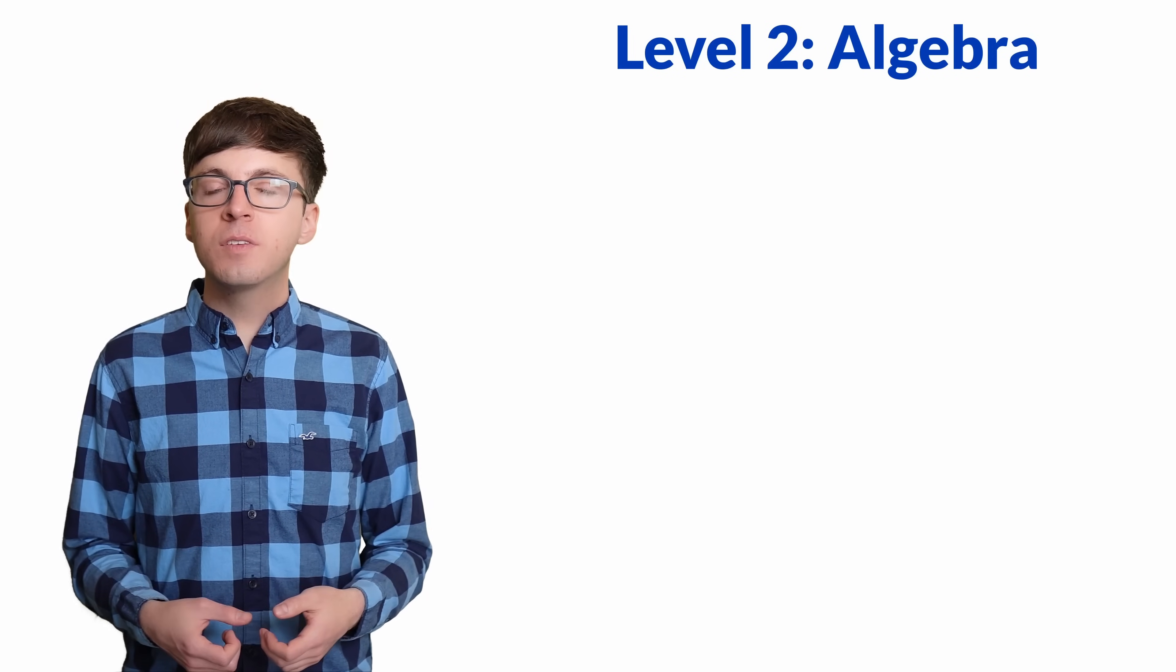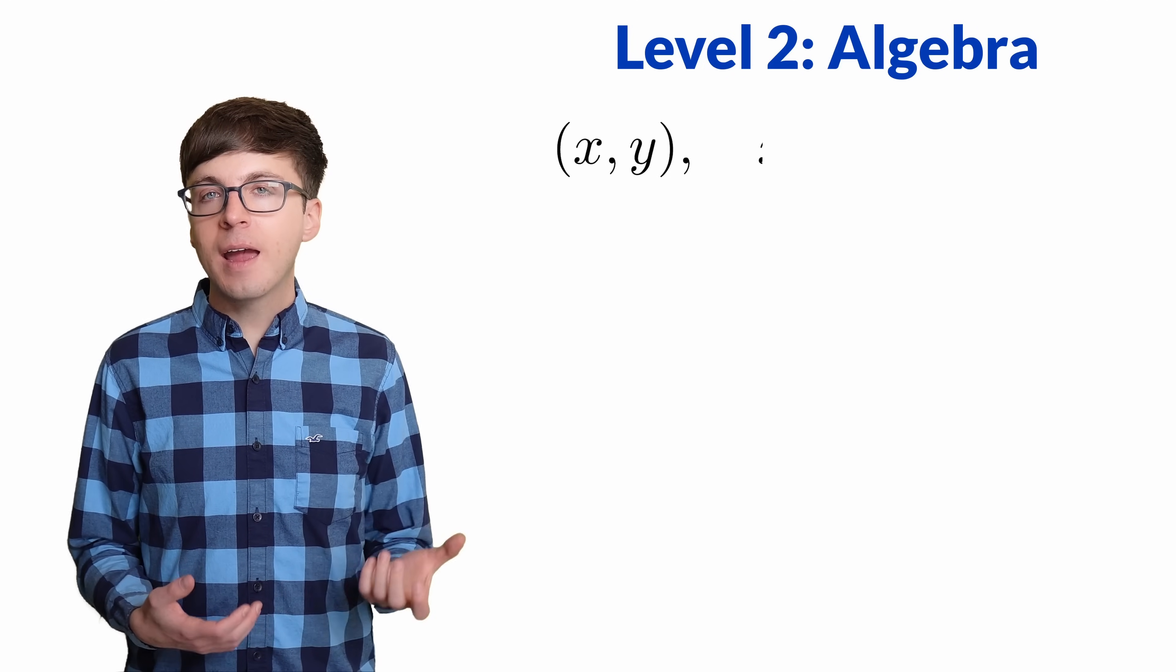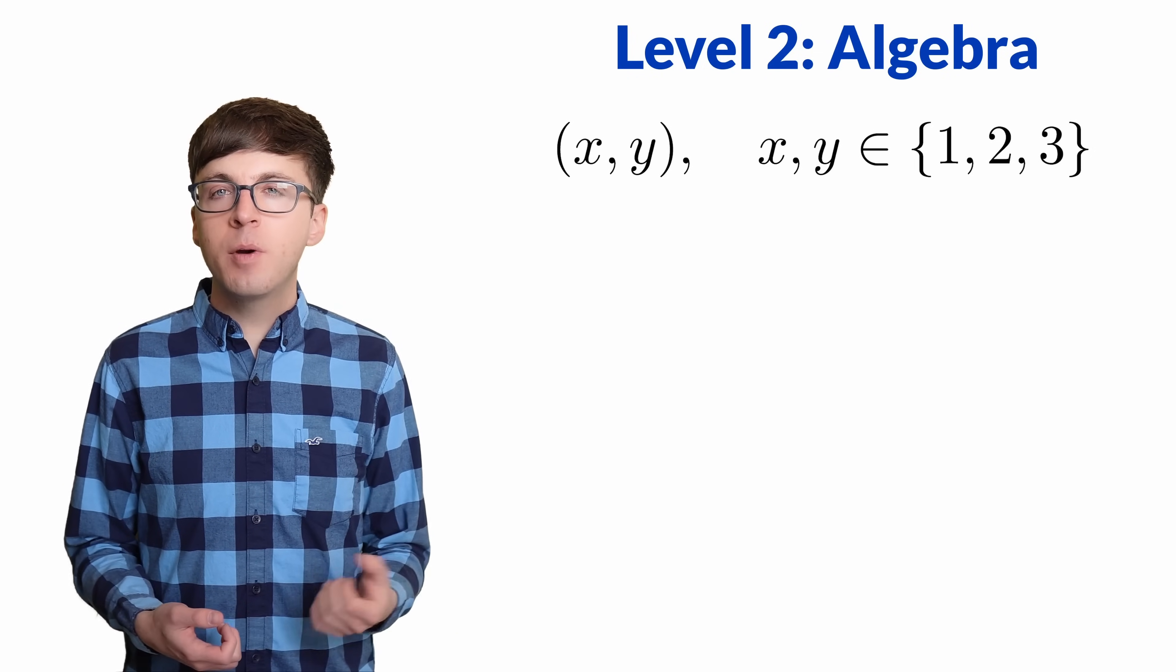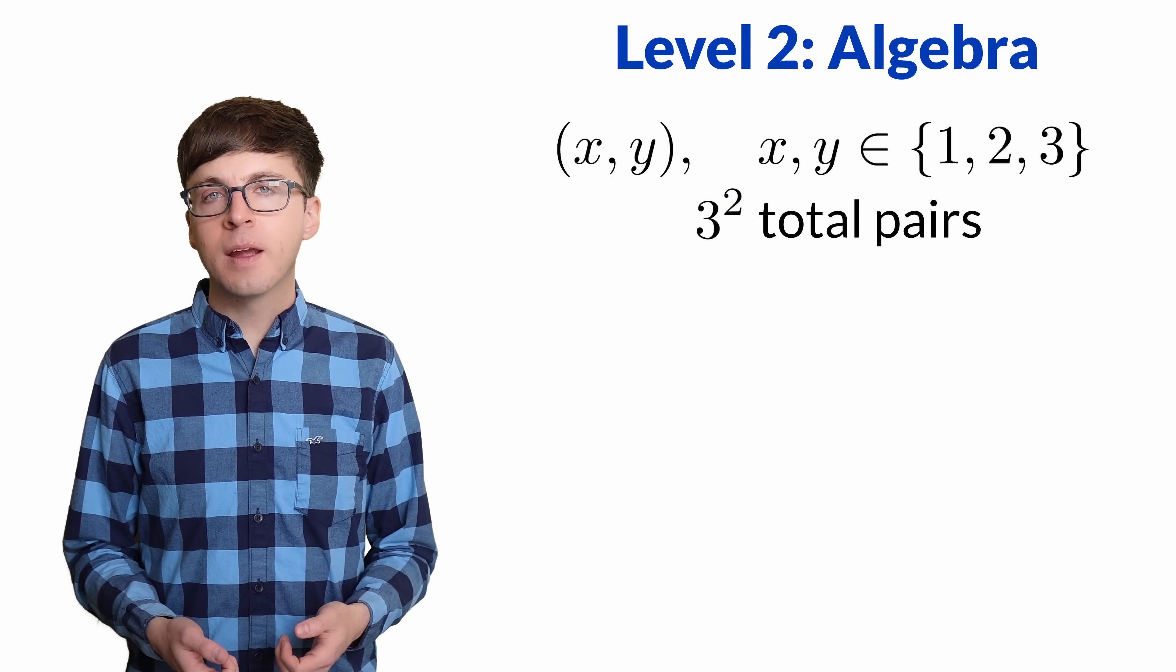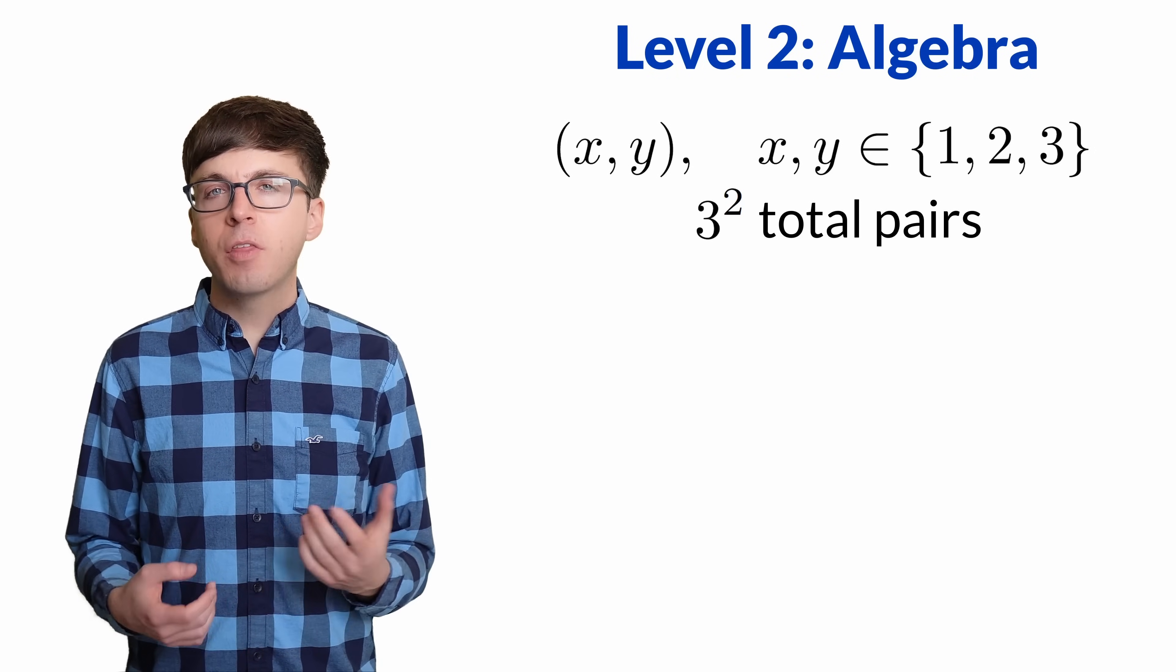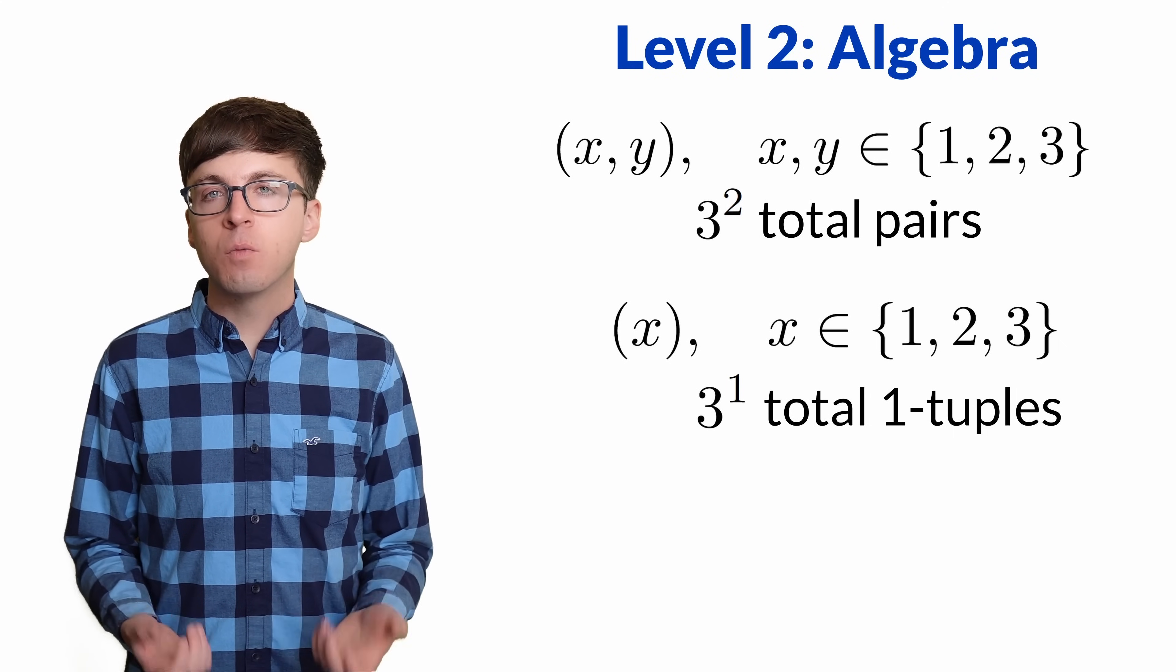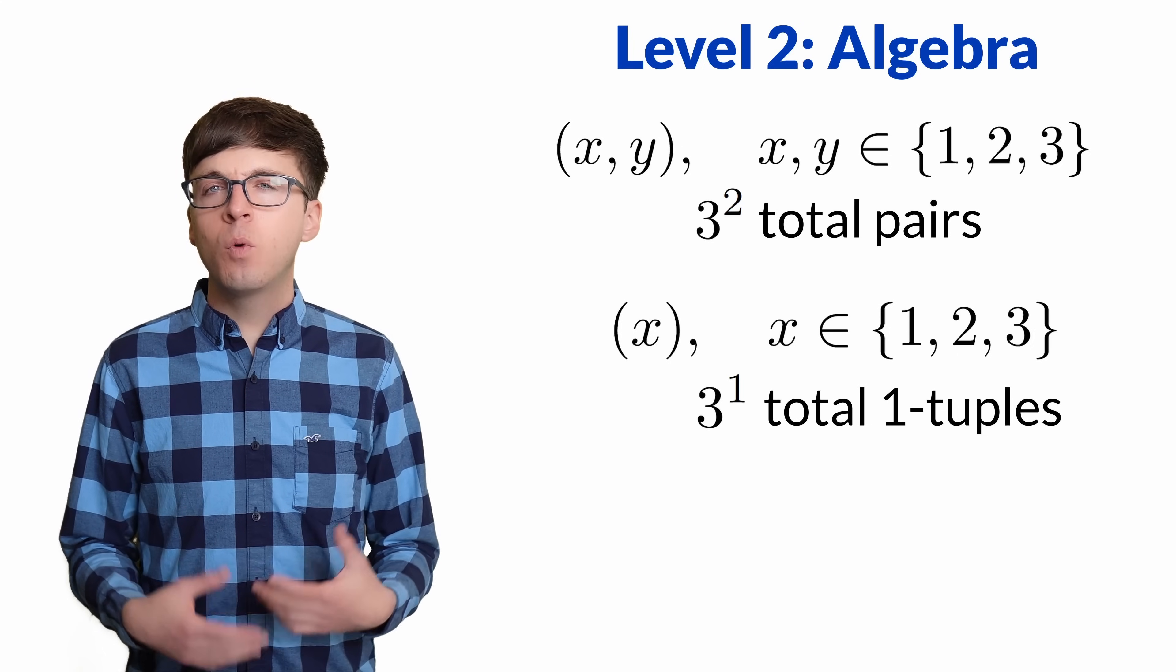We can also interpret exponents in terms of counting. Imagine we want to find all of the ordered pairs x, y where x and y are both chosen from the set 1, 2, 3. It's okay if x equals y. How many of these ordered pairs are there? We have 3 possible choices for x and 3 possible choices for y, so we get 3 squared total pairs. 3 squared counts the number of ordered pairs that can be made from a set of 3 elements. Then 3 to the power 1 would be the number of ways to pick a single number from the set 1, 2, 3. We can call these 1 tuples. They're ordered sequences of 1 element. Or in programming, you could think of this as a list of length 1.